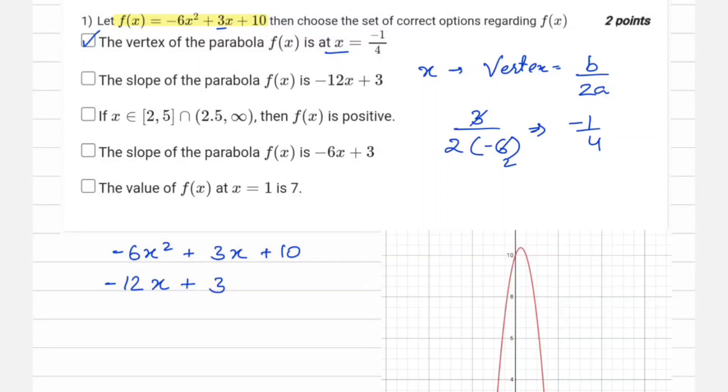So this one also comes out to be true. Then for the third option, we are asked if x belongs to [2,5] and (2.5, infinity), intersection of this, then f(x) is positive. So firstly, the intersection will come out to be (2.5, 5].